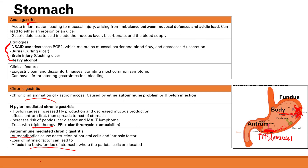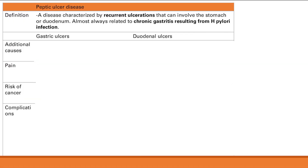Now we've talked about acute and chronic inflammation, so let's talk about peptic ulcer disease. This is a disease characterized by recurrent ulcerations that involve the stomach or duodenum — recurrent ulcerations is the key. It's usually related to chronic gastritis resulting from H. pylori infection, which leads to too much acid secretion and poor mucosal defense, causing ulcerations of the gastric lining.